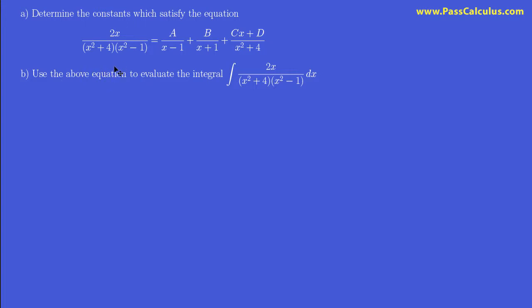So the first thing I notice here is that x squared minus 1 is not factored, and I think we should factor that. Of course x squared minus 1 is just x minus 1 times x plus 1.